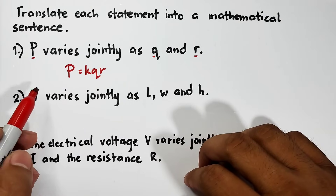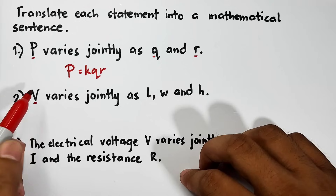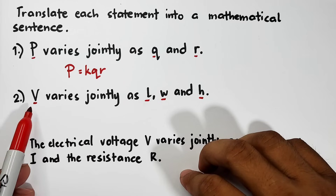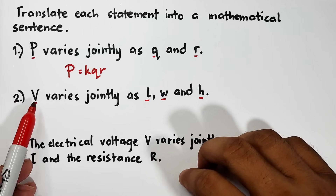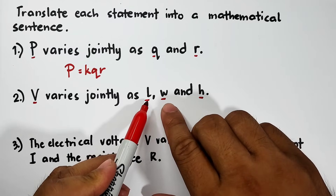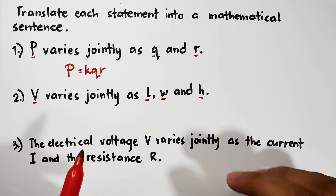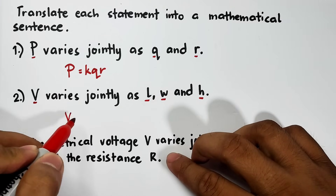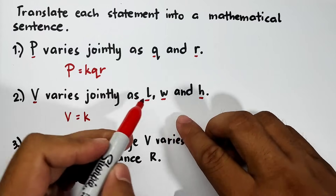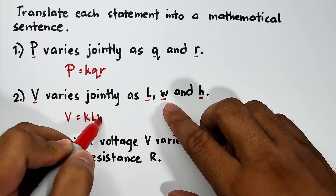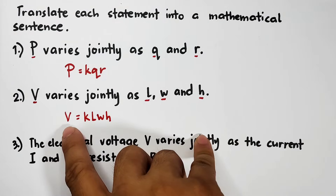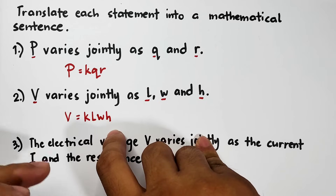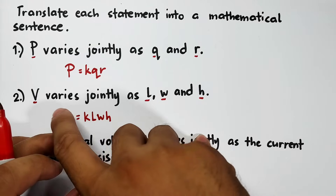Now let's move on with item number two. We have v varies jointly as l, w, and h. We have four different variables: v, l, w, and h. Actually, this one is a formula for volume in geometry. So let's translate this into a mathematical sentence: copy v, then equal to your constant k, then write l, w, h. So what we have now is v is equal to k l w h. This is the equivalent equation of this statement.